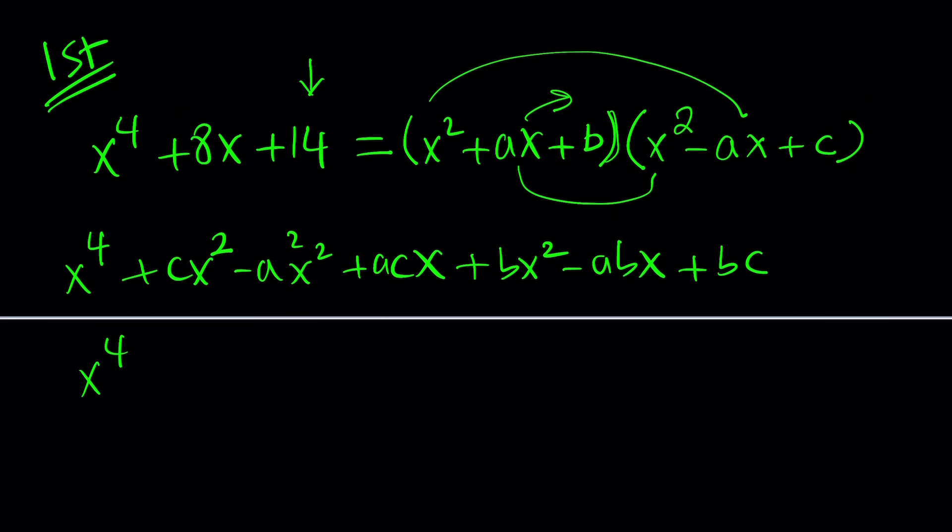Now let's go ahead and combine like terms: x to the fourth power. So it's going to be like b plus c minus a squared as the coefficient of x squared. And then we have ac minus ab as the coefficient of x. And our constant term is bc. So far so good. Are you following?